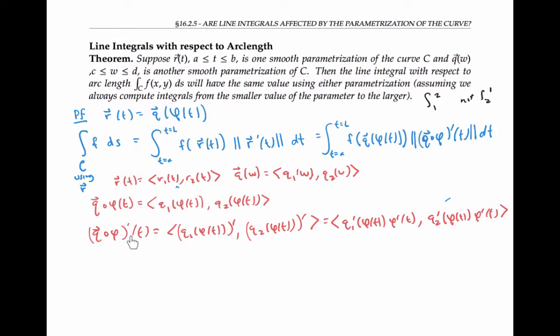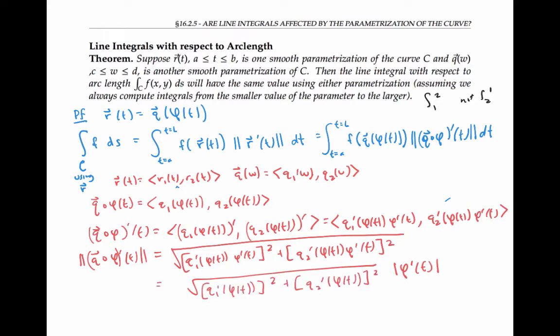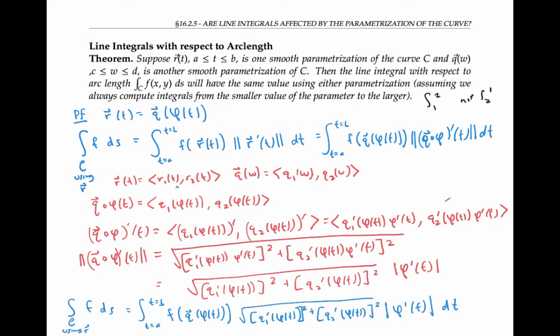Taking the norm of that expression — by taking the square root of the squares of each component — each term has a φ′ squared in it. Factoring that out, the square root of φ′² is the absolute value of φ′(t). Now I have a way of writing the normed expression in the line integral in terms of components, and I'll plug this formula in. To make this expression look like what I'd get using parameterization q, I'll perform a u-substitution setting u = φ(t).